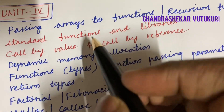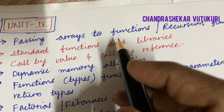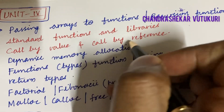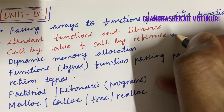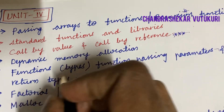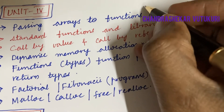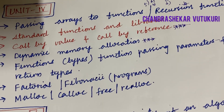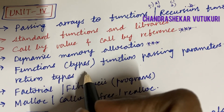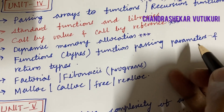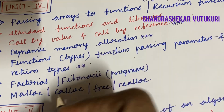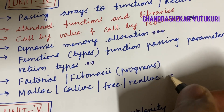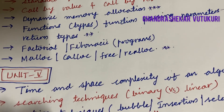Unit 4 covers passing arrays to functions, and recursion functions — said to be the top most question. Standard functions and libraries, call by value and call by reference, are long questions. Dynamic memory allocation is a likely short question. Functions and their types, passing parameters and return types, are also long questions. Programs related to factorial, Fibonacci, as well as malloc, calloc, free, and realloc, may be short two-mark questions.